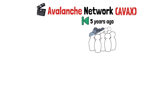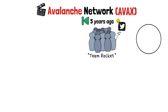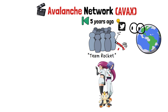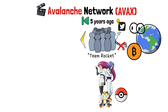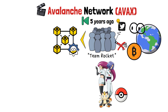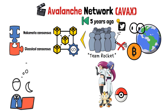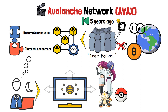Five years ago, an anonymous group of individuals named Team Rocket tweeted their masterful idea that would tilt the crypto world on its side. And while you probably know the name from the anime, this Team Rocket was not planning to steal anyone's Pokemon — nor crypto, for that matter. The mystery team came up with a new blockchain protocol that would combine two sets of rules: the classical consensus and the Nakamoto consensus. Someone caught on to the idea and started experimenting, trying to create a network that was both scalable and robust, as well as speedy and decentralized. They created something bound to become a hallmark in crypto, and called it Avalanche.